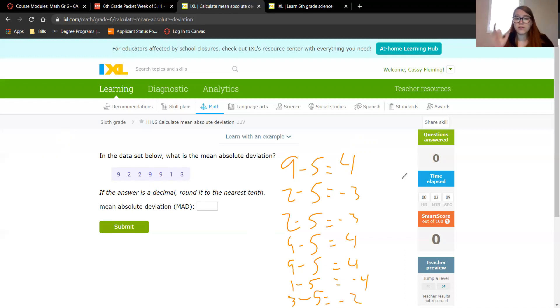Another thing about finding the mean absolute deviation is we have to add all these together, but we need the absolute value of these numbers. So there's no negative or positive, it is just the number. So the absolute value of 4 is 4, the absolute value of negative 3 is 3. Again, 3, 4, 4, the absolute value which will be 4, and the absolute value which is 2.